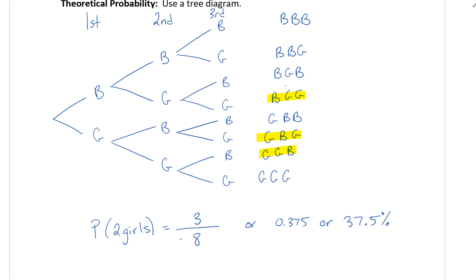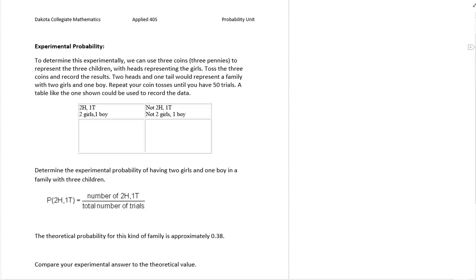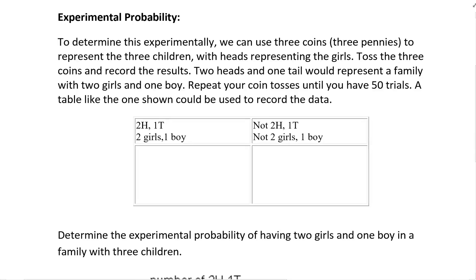Now we've done this, this would be the theoretical probability right, this is what we would assume is going to happen. Now in terms of an experiment though, we're not going to make people have babies so we're going to do an experiment here where we're going to use coins and we'll do this in class and see how close we can get to the probability that we want.